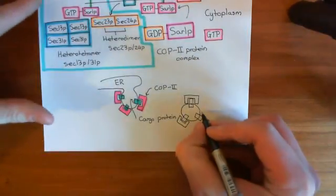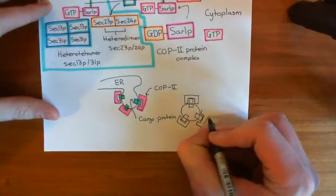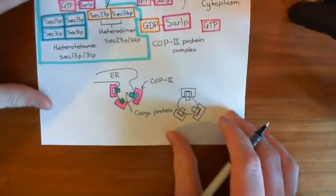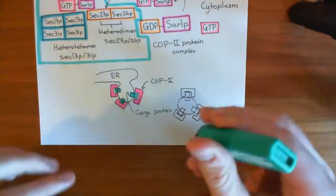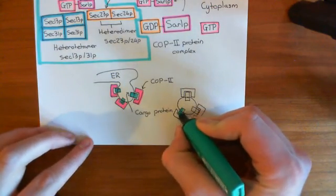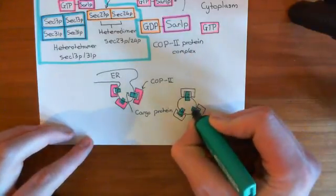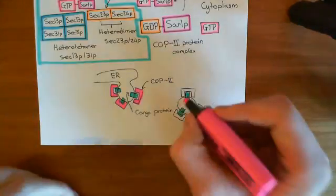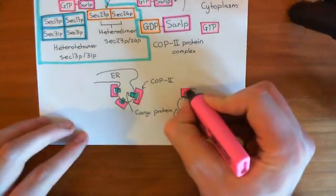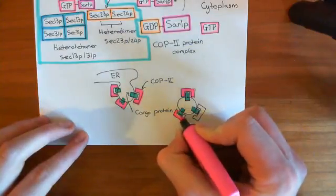So COP-2 has now bound to all these cargo proteins, and you now have this COP-2 coated vesicle. So let me colour these in. So in turquoise, we still have our cargo proteins. And then round the outside, we have these COP-2 proteins in this sort of magenta colour.